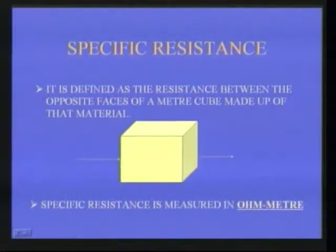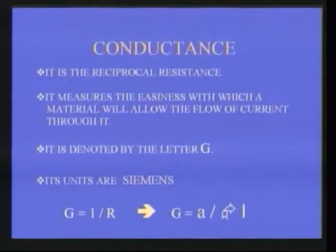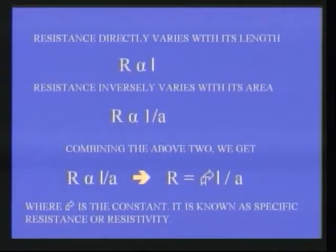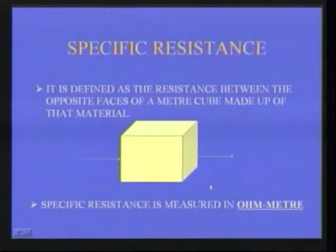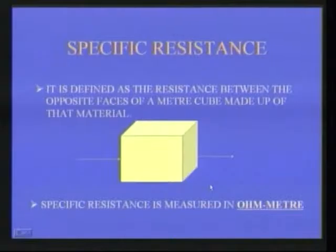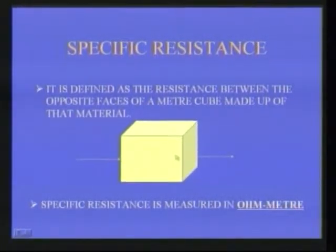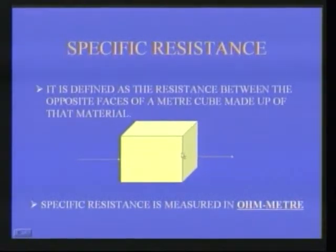Now let us see the definition of specific resistance. If we put L = 1 metre and A = 1 square metre, then R = ρ. Therefore, specific resistance is defined as the resistance between the opposite faces of a metre cube made up of that material. The specific resistance is measured in ohm-metres.